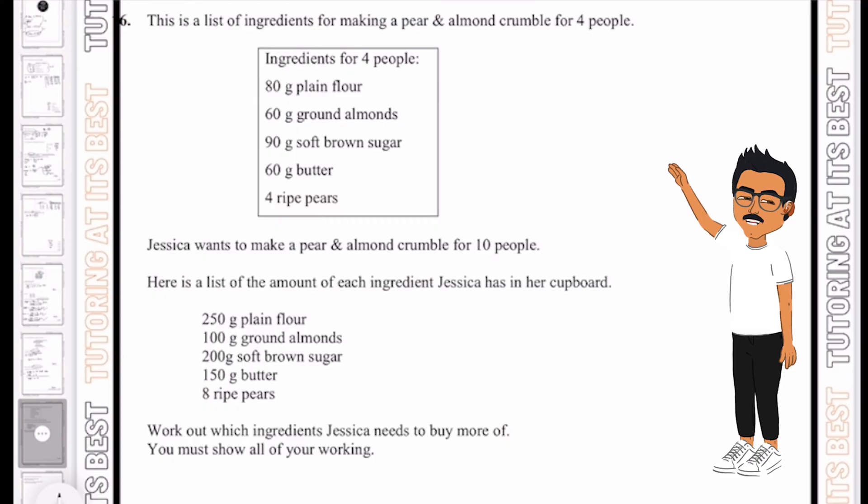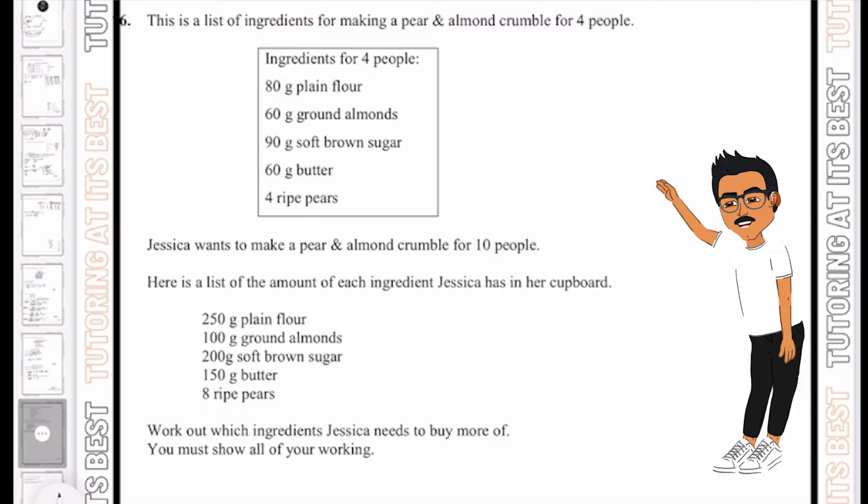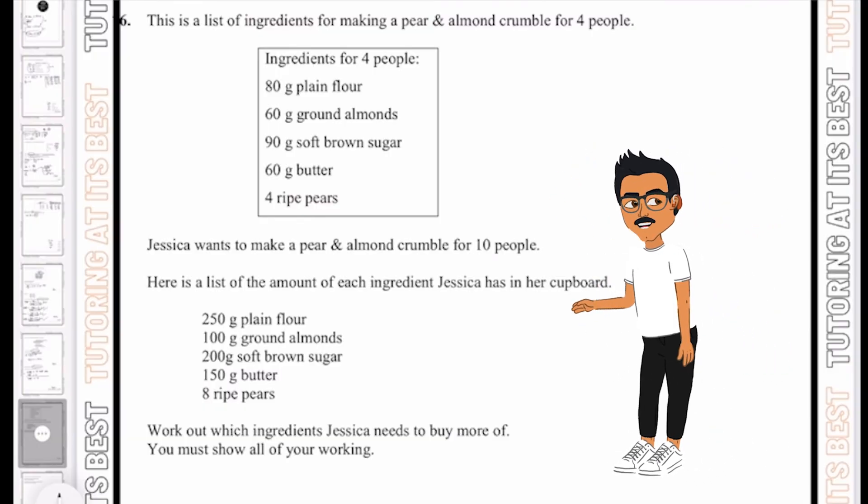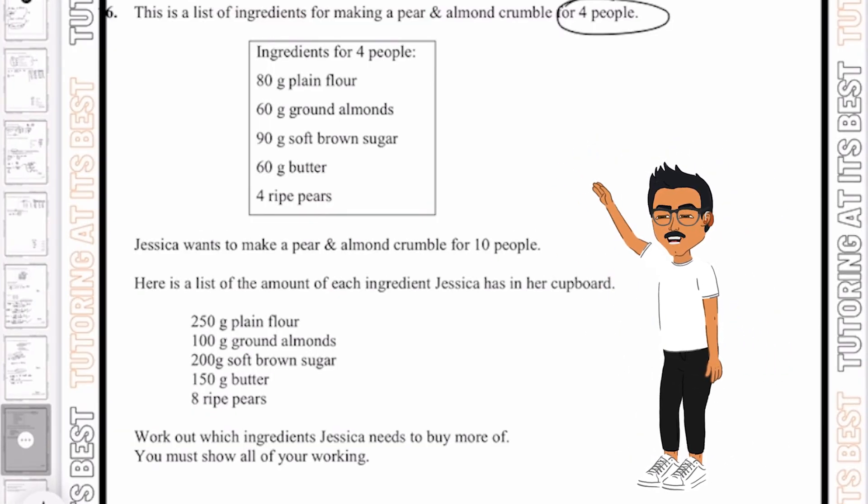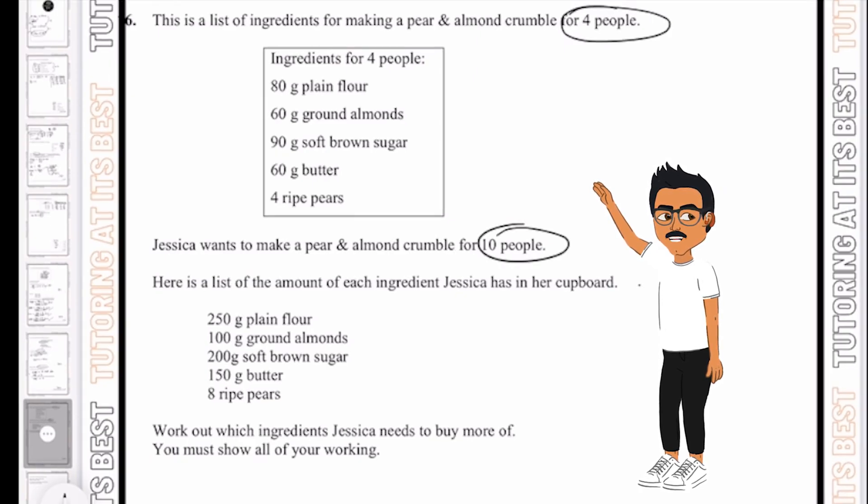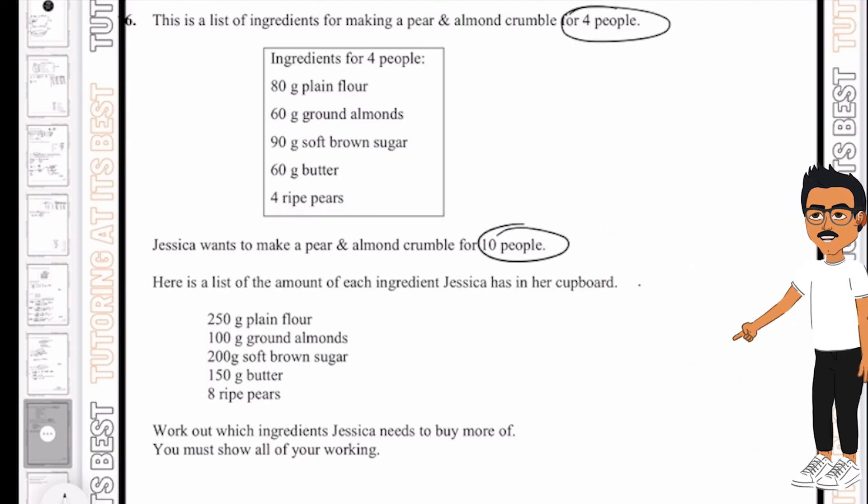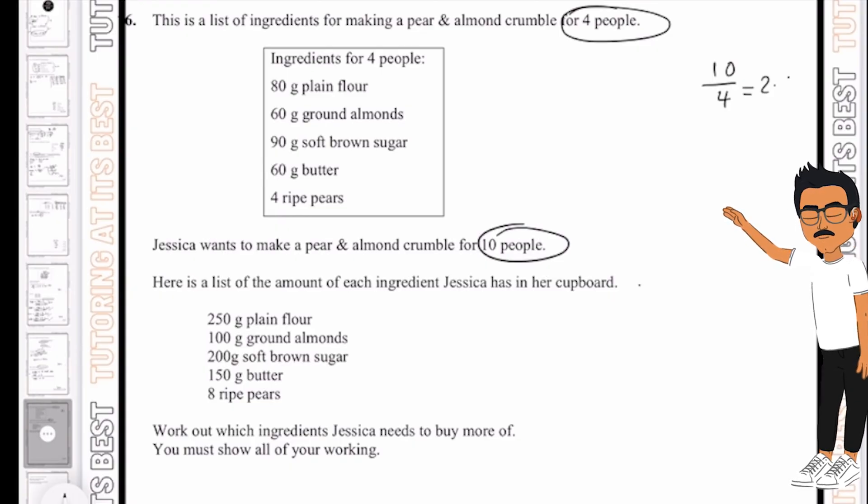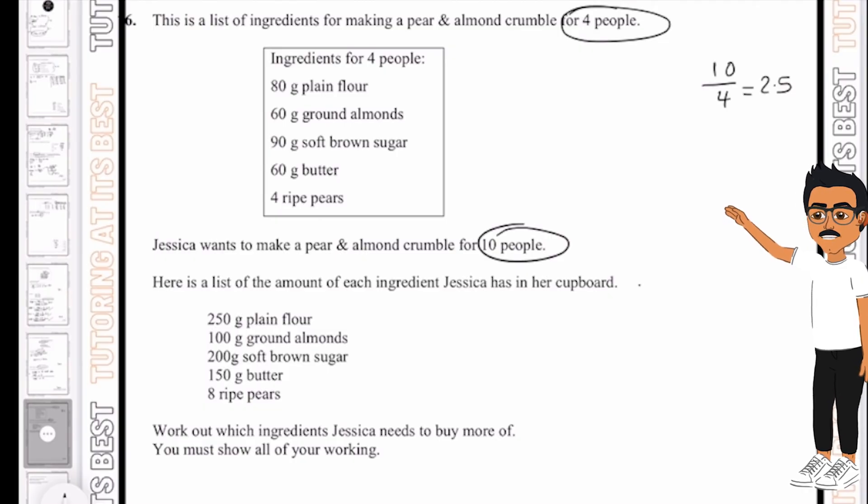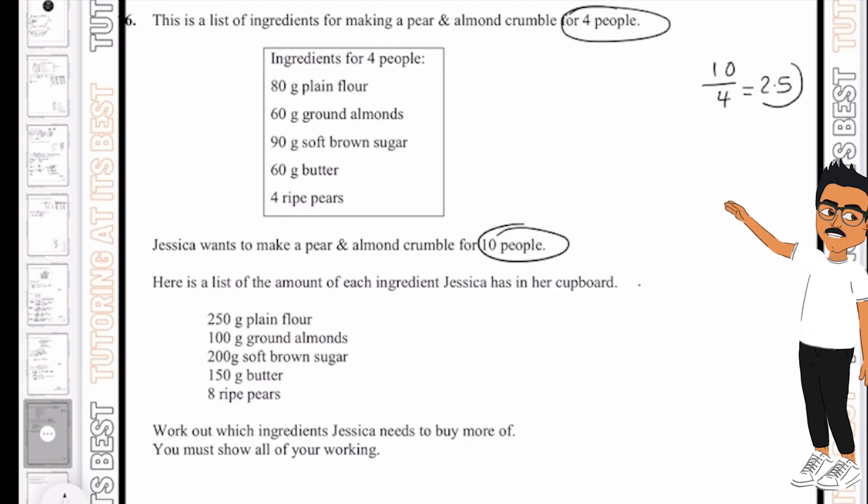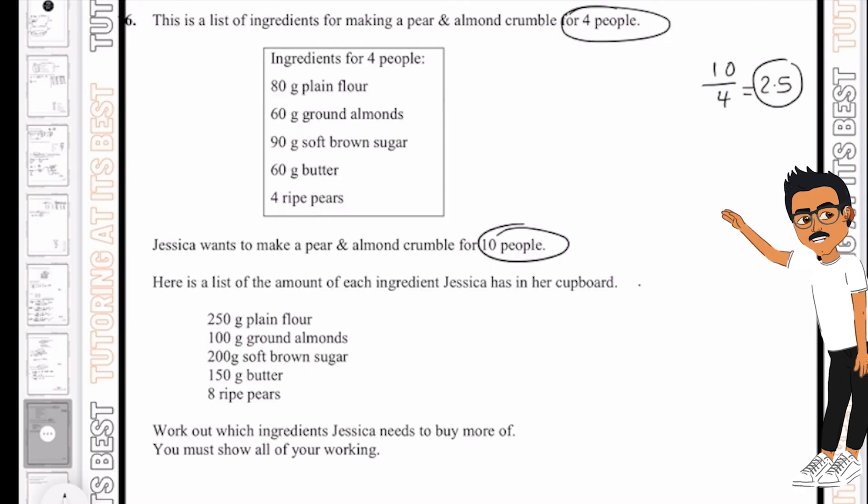There is a list of ingredients for making a pear and almond crumble for four people. And Jessica wants to make a pear and almond crumble for 10 people. So this is the ingredients for four people, but we need it for 10 people. So the first thing we're going to do here is find the multiplier. And that's going to be by simply having 10 divided by 4, which gives us 2.5. So now we know that we need to multiply 4 by 2.5 to get us to 10.